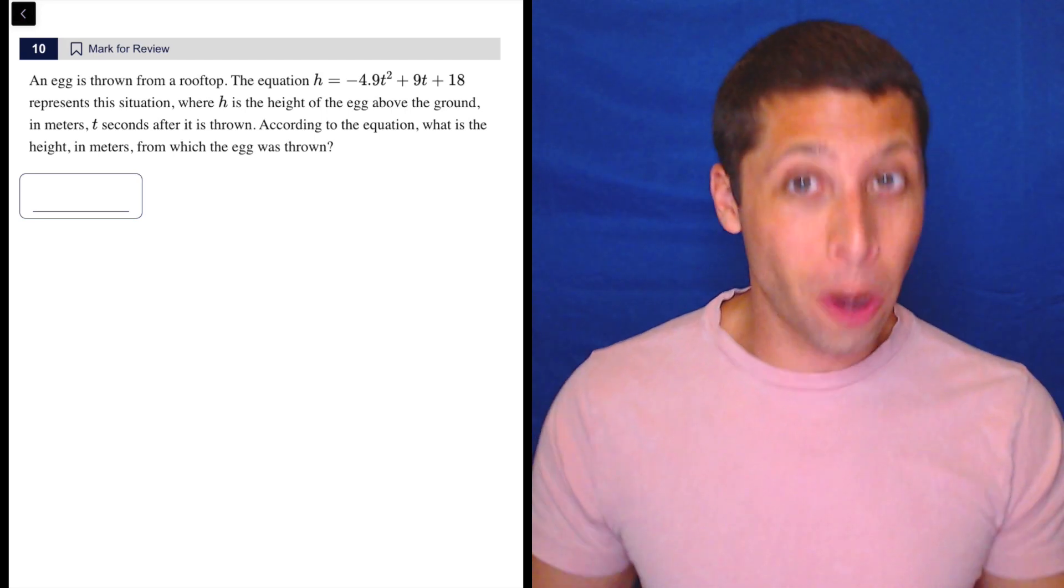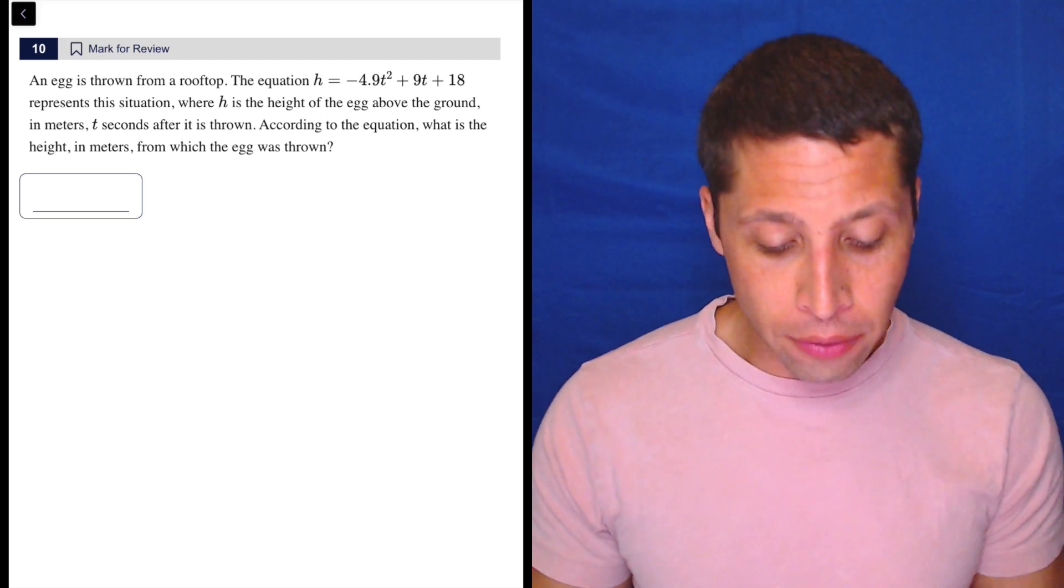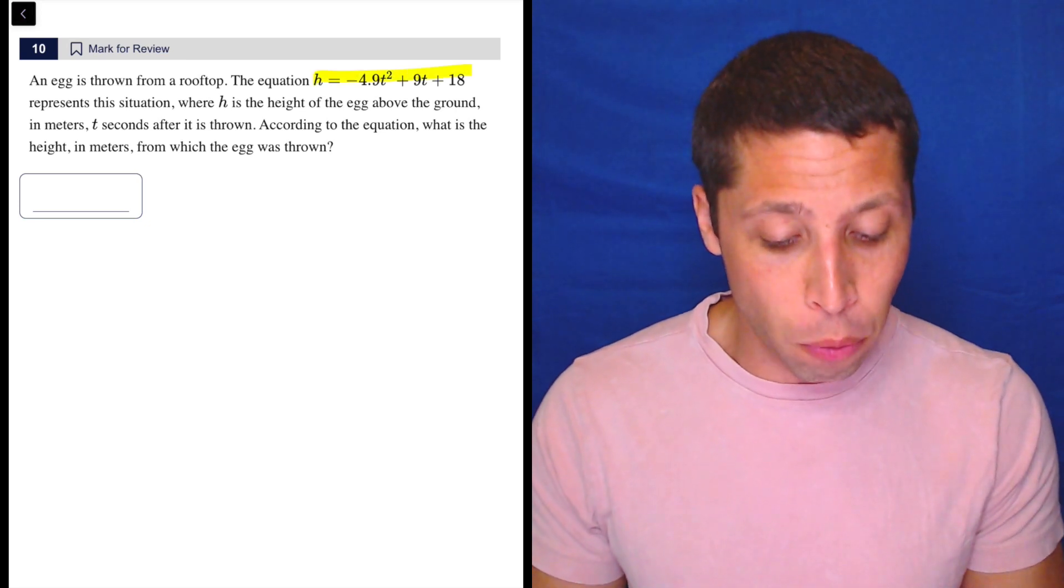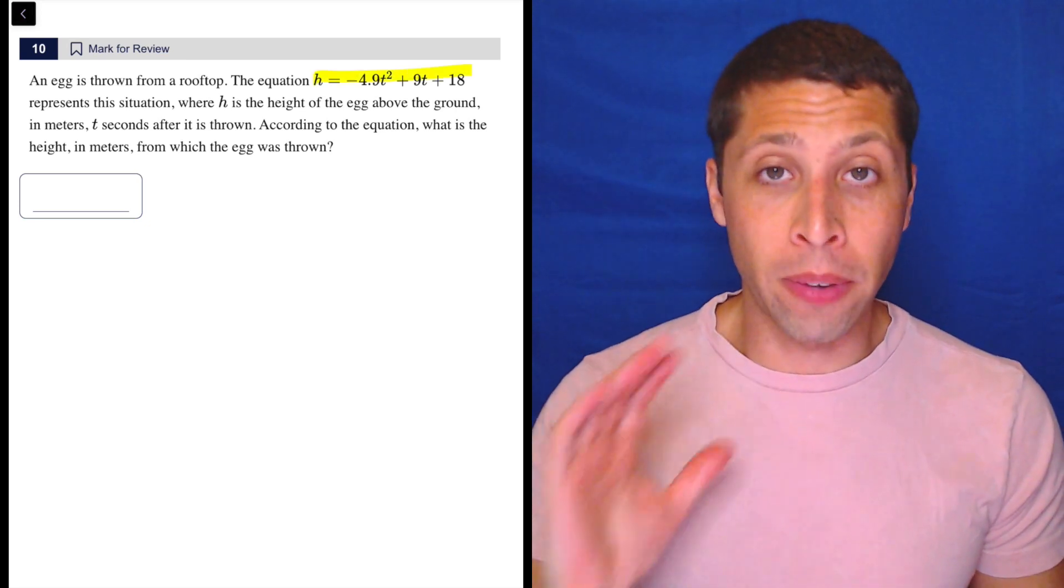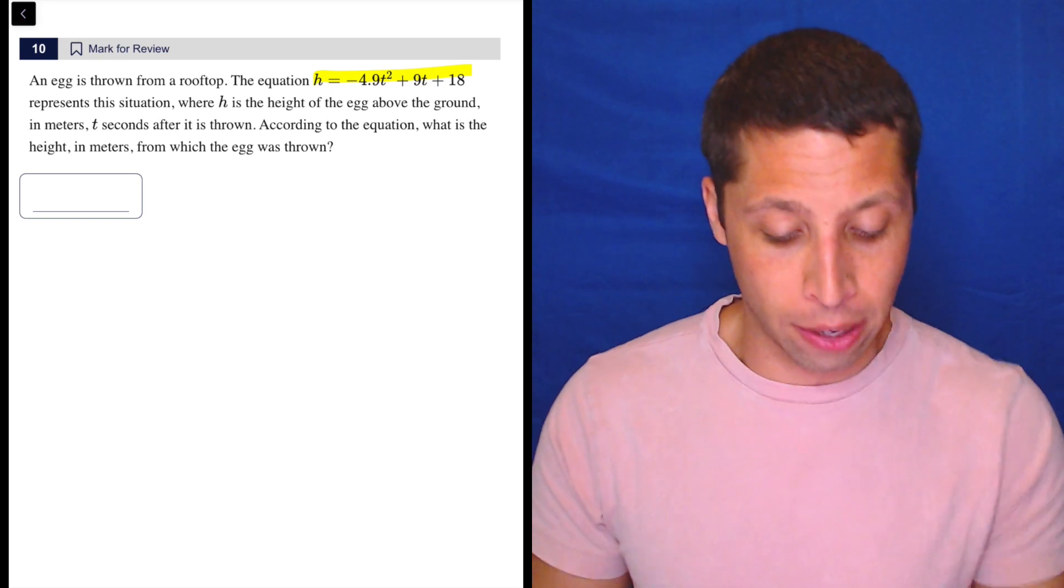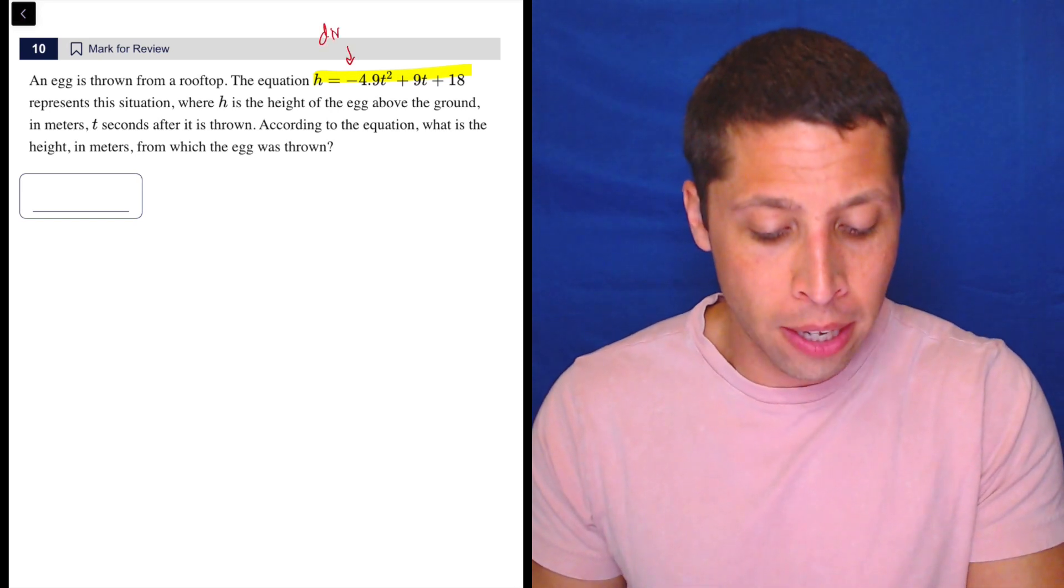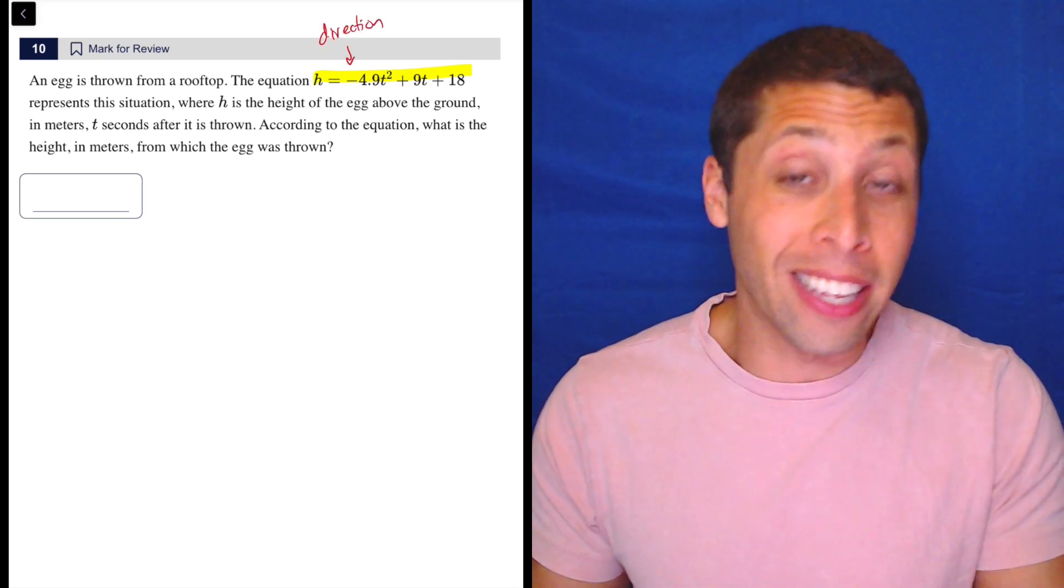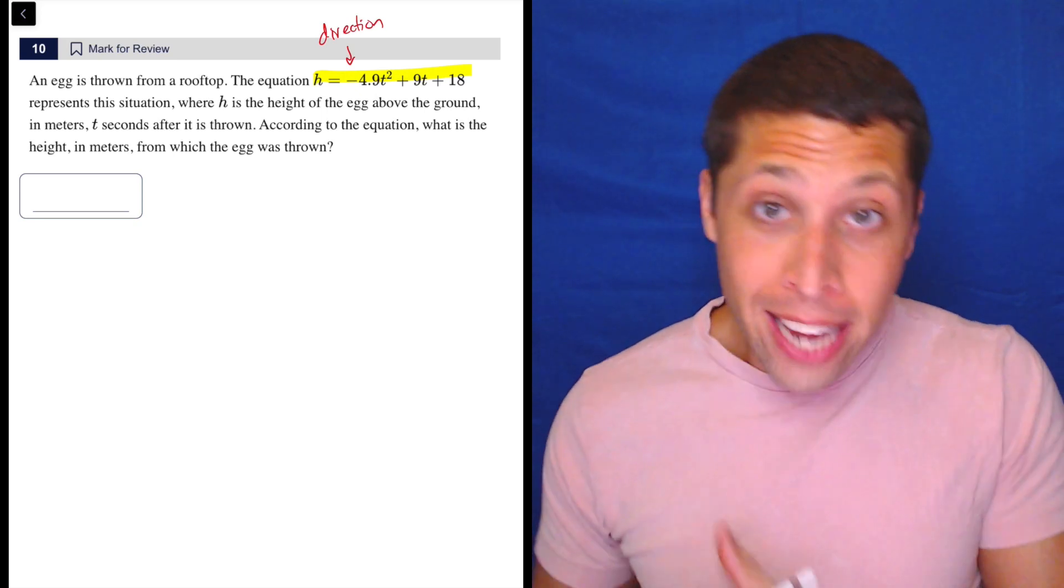It's about quadratic equations because they are giving you a specific quadratic equation. This is the standard form, and we should know that the standard form very simply tells us two easy things. It tells us the direction of the parabola, so basically the value of the a term.